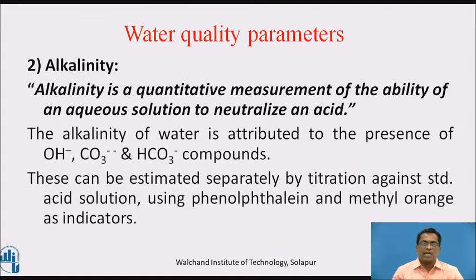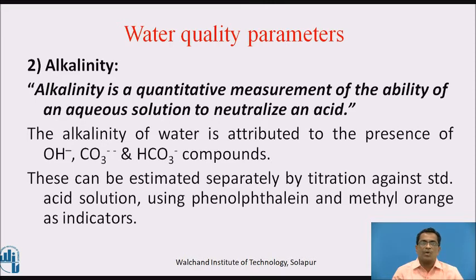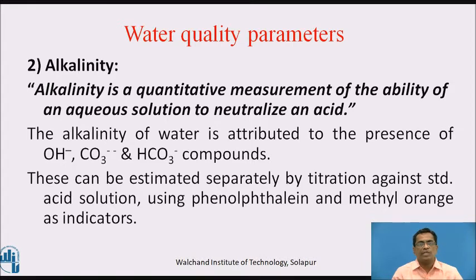Second water quality parameter: alkalinity. Alkalinity is a quantitative measurement of the ability of an aqueous solution to neutralize acid. The alkalinity of water is attributed to the presence of hydroxide ions, carbonates, and bicarbonate compounds. This can be estimated separately by titration against standard acid solution using phenolphthalein and methyl orange indicators.